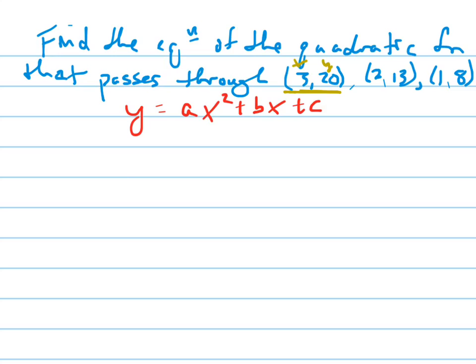So first I'll plug in 20 for y and 3 for x. 3 squared is 9, so I'll write 9a plus 3b plus c. Notice I'm plugging in for x and y, which means my variables now are really a, b, and c.